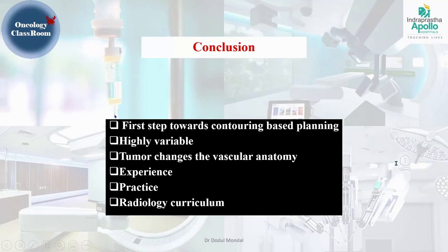In conclusion, it is important to identify the vessels because in many cases they are the first basic step to contour the lymph nodes. With more conformal, contour-based planning, missing lymph nodes can be dangerous for disease outcome. However, vascular anatomy is never fixed—it may be variable. Surgeons frequently encounter anomalies and aberrations from normal anatomy. Tumors can also change vascular anatomy; if a large tumor infiltrates a vein or artery, that can alter the vessel anatomy entirely.